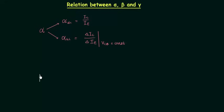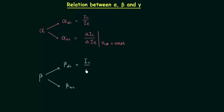Beta is the amplification factor in common emitter configuration, and like alpha we have two types of beta. Beta DC is equal to IC divided by IB, and beta AC is equal to delta IC divided by delta IB when the output voltage VCE is constant.